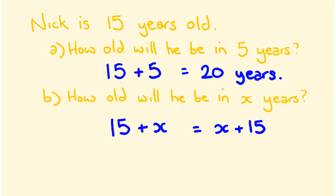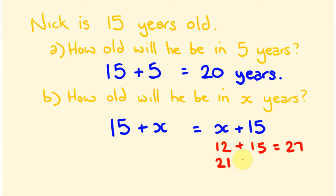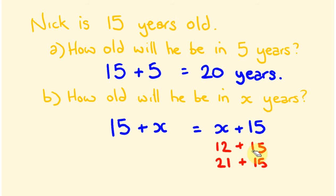For example, if x is 12 years, then x plus 15 gives 12 plus 15, which is 27. If x is 21 years, then 21 plus 15 equals 36. This is where algebraic expressions are really powerful — you create a rule that you can substitute values into without having to redo the same calculations again and again.